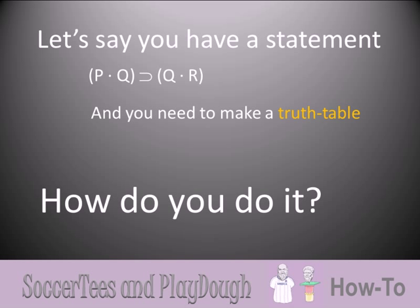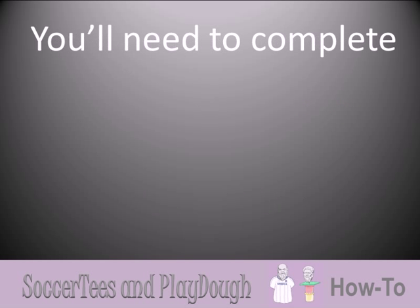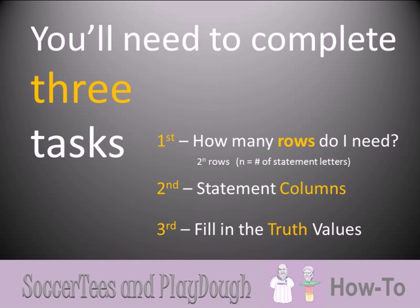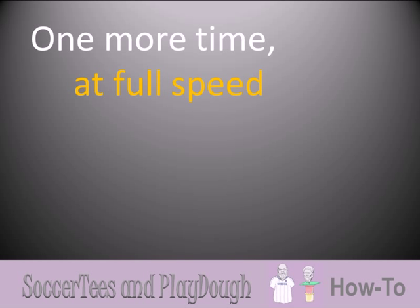Let's review quickly. You have a statement and need to make a truth table. You complete three tasks: first, figure out how many rows the table needs using the formula 2 to the n, where n is the number of statement letters; second, create the statement columns; and finally, fill in the truth values.